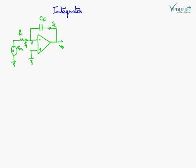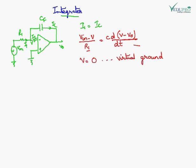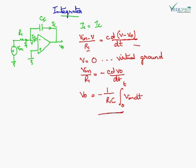This is the circuit of an integrator using an op-amp. The feedback resistance is replaced by a feedback capacitance. In this circuit, I1 equals IC because the current I2 is 0. I1 equals VIN minus V upon R1, and the capacitor current is C times d(V minus V_out) upon dt. Since V equals 0 due to virtual ground, the output is given by this expression. It is clear that the output will be the integration of the input.